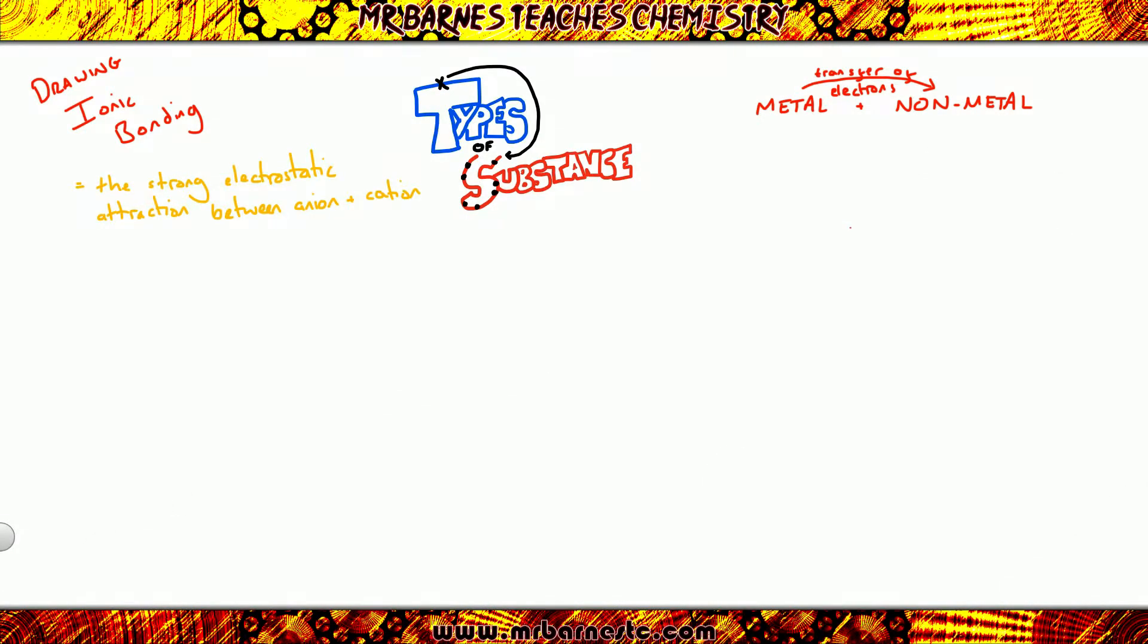The next thing you need to be able to do in ionic bonding is to be able to draw it, and to be able to draw dot and cross diagrams. So we're going to have a look at the reaction between aluminium and chlorine. Aluminium is a metal, so it loses electrons. Chlorine is a non-metal, so it gains electrons. Therefore, we know it's ionic.